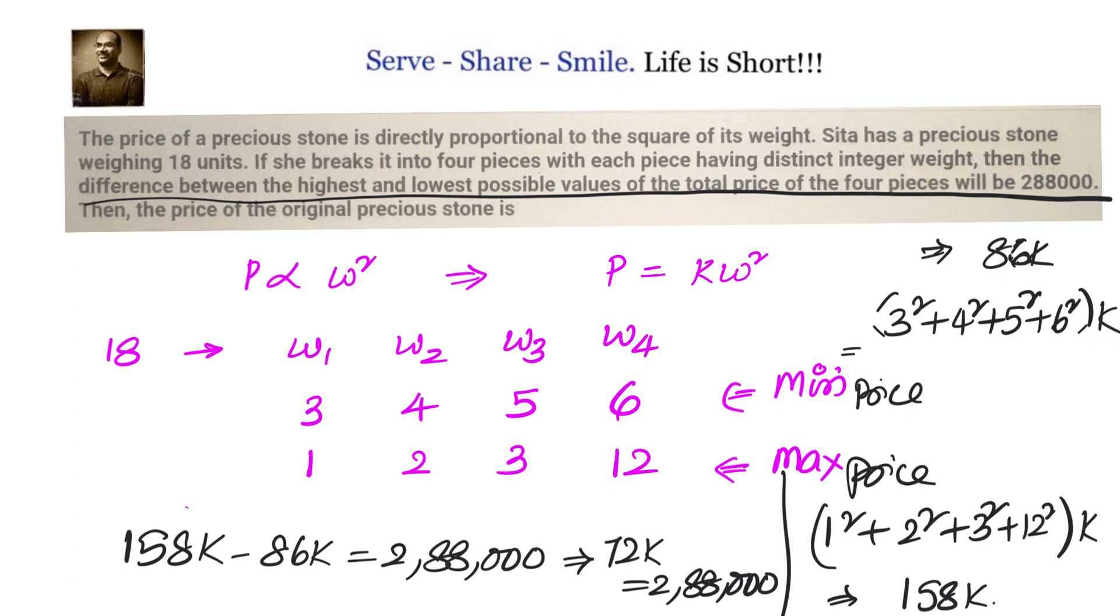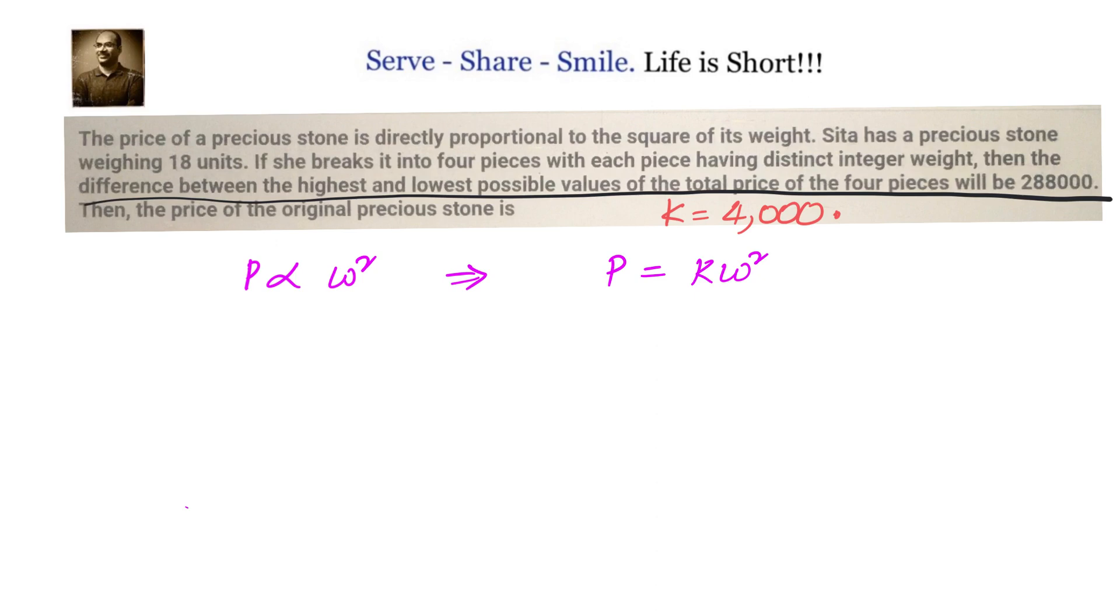Now once we got K equals to 4,000, this is pretty simple now. We have to just multiply the weight, total weight 18 units, square it and multiply with 4,000. So the original price of the stone is 4,000 into 18 square because all weights will add up to 18 units. So 4,000 into 18 square, 18 square is 324, 324 into 4 is 1,296. So you have 1,296,000 or it is 12,96,000. So the price of the original precious stone is equals to 12,96,000.